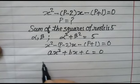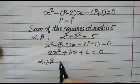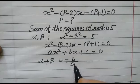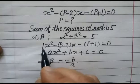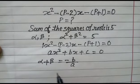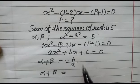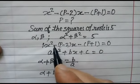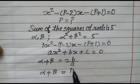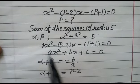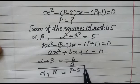The sum of the roots alpha + beta is equal to -b/a. Here a is 1, so alpha + beta equals -b, which gives us plus (p-2). So alpha + beta = p - 2.